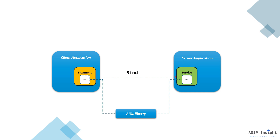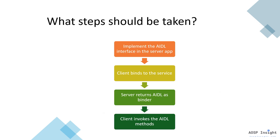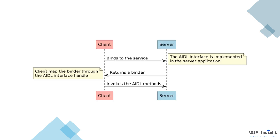In this video we have a client and a server application — both are Android applications. The client application will try to bind to the server application and the rest of the communication sequences will happen. As you can see in this slide, the client application has a fragment and a reference to the AIDL interface, while the server application has a service that implements that AIDL interface. Both applications are mandatory for AIDL interface communication, and the AIDL library is used by both.